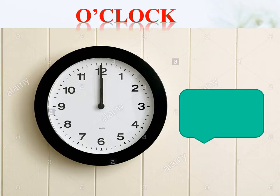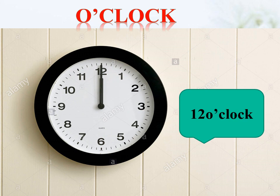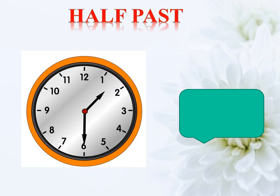Look here — both hands are pointed at 12. Whenever the long hand points at 12, it is o'clock. When the minute hand is at the top of the clock on the 12, it means it is 12 o'clock. We write 12 here because the short hand — the hour hand — is also at 12. That is the reason it is 12 o'clock.